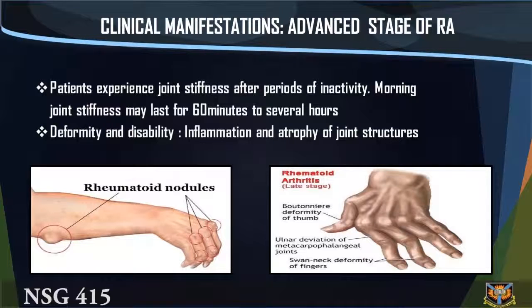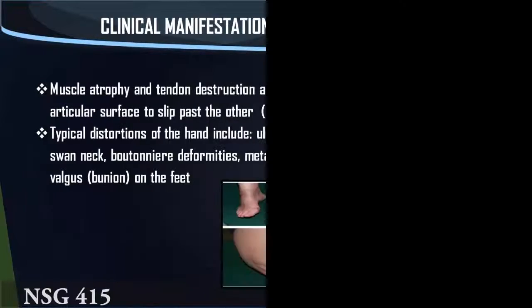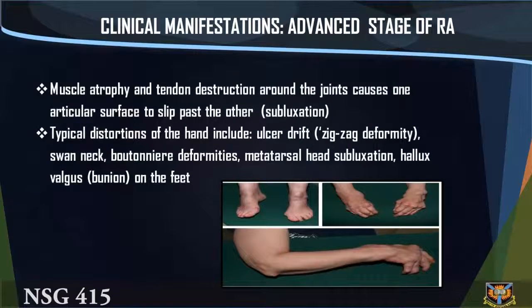Clinical manifestations — advanced stage: Patients experience joint stiffness after periods of inactivity; morning joint stiffness may last for 60 minutes to several hours. (2) Deformity and disability. (3) Inflammation and atrophy of joint structures; muscle atrophy and tendon destruction around the joints causes one articular surface to slip past the other — subluxation.